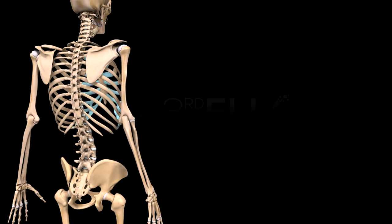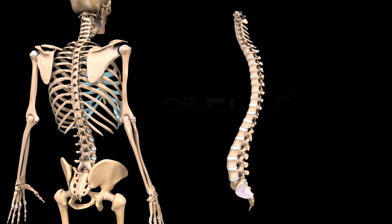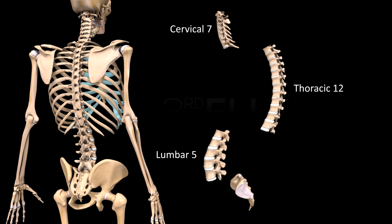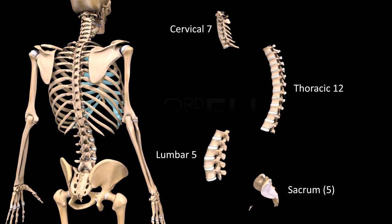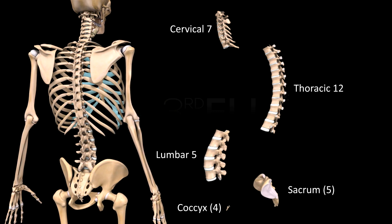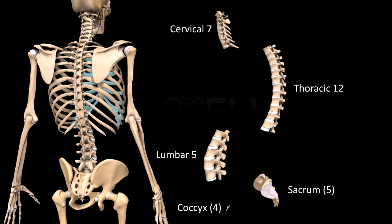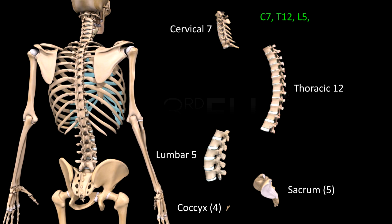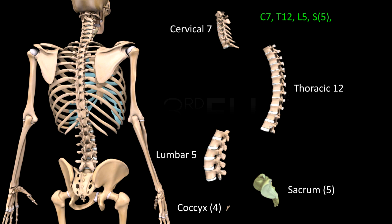Vertebrae are of five types: cervical, thoracic, lumbar, sacral, and coccygeal. The vertebral formula for human beings is C7, T12, L5, S5, C4.